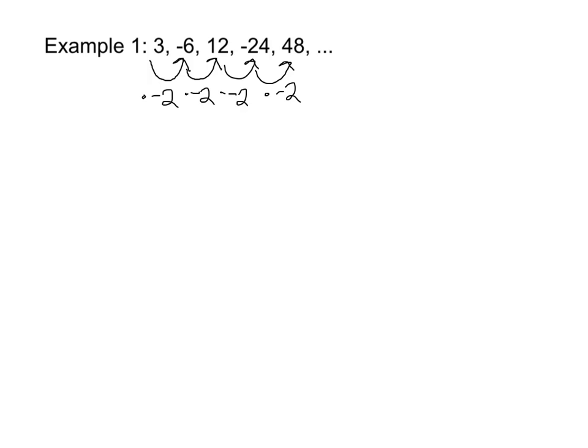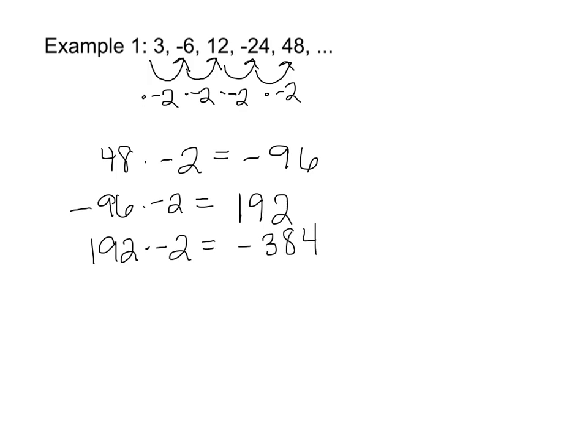So in this case I might say okay well 48 times negative 2, that's just going to give me negative 96, and then when I multiply negative 96 by negative 2, I will get 192, and a final term 192 times negative 2 will give me negative 384. So my next three terms are negative 96, positive 192, and negative 384.